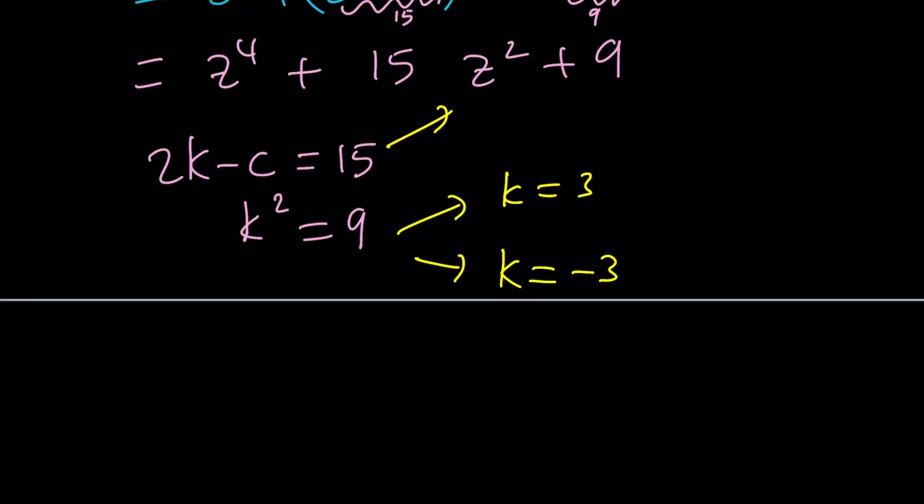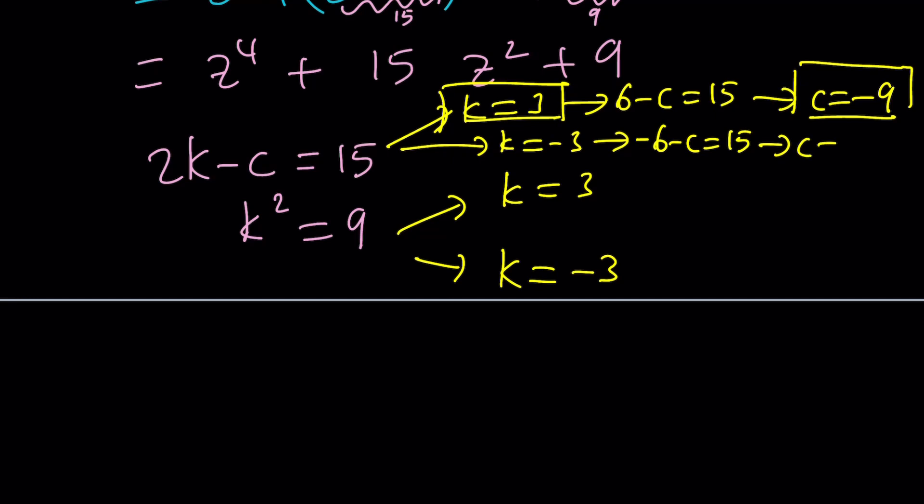So we can go ahead and plug these in. For example, if k is equal to 3, then we get 6 minus c equals 15, which means c is equal to negative 9. So let's go ahead and box those. If k is equal to negative 3, then this gives us negative 6 minus c is equal to 15, and that means c is equal to negative 21.